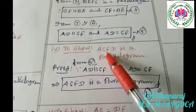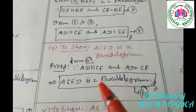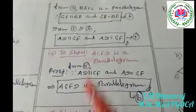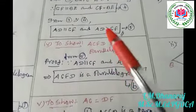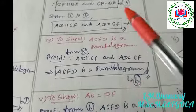For the fourth subdivision, we have to show that ACFD is a parallelogram. From equation number five, we have already proved AD is equal to CF and AD is parallel to CF. Therefore, ACFD is a parallelogram — this is equation number six.